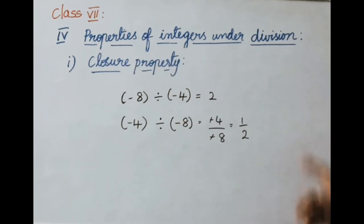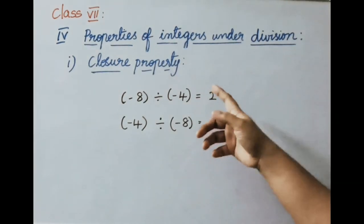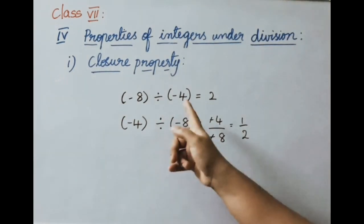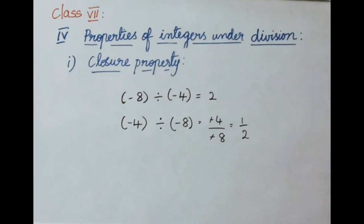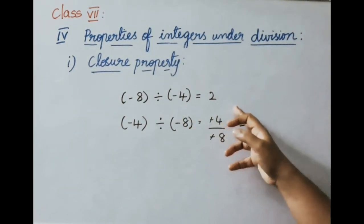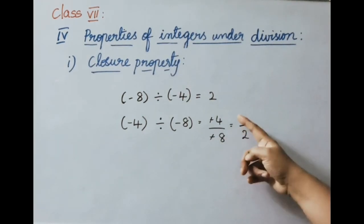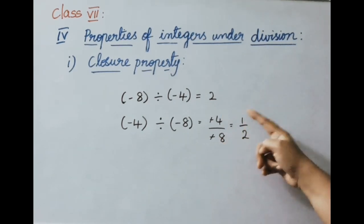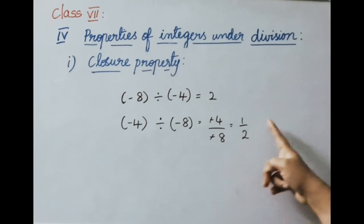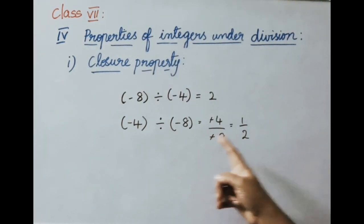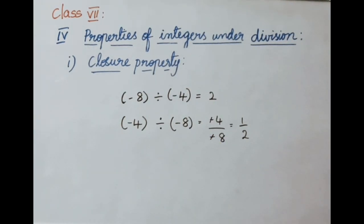Fourth section: properties of integers under division. First, closure property under division. Example: A divided by B is minus 8 divided by minus 4 equals 2 — an integer. But B divided by A is minus 4 divided by minus 8 equals one half — which is not an integer. Therefore integers are not closed under division.